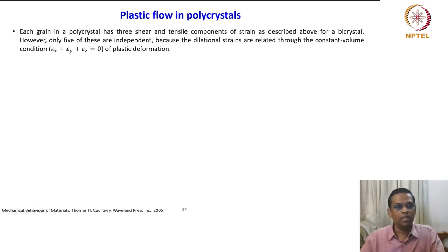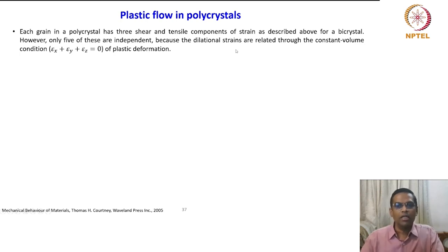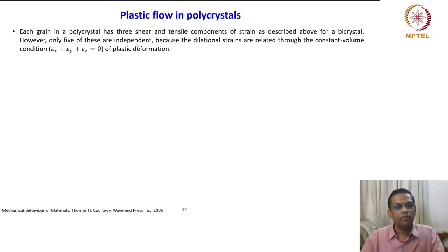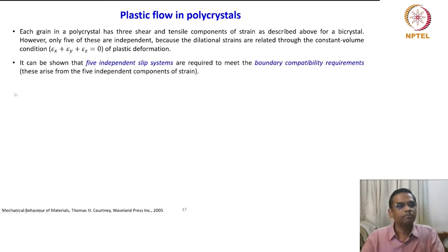What is that condition? Epsilon X plus epsilon Y plus epsilon Z equals zero for plastic deformation — plastic deformation results in constant volume. Because of this, though we see six components, only five of them are independent. It can be shown that five independent slip systems are required to meet the boundary compatibility requirements.